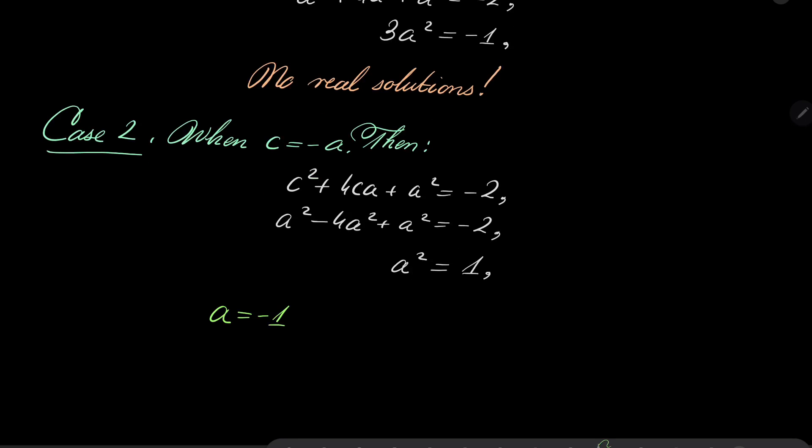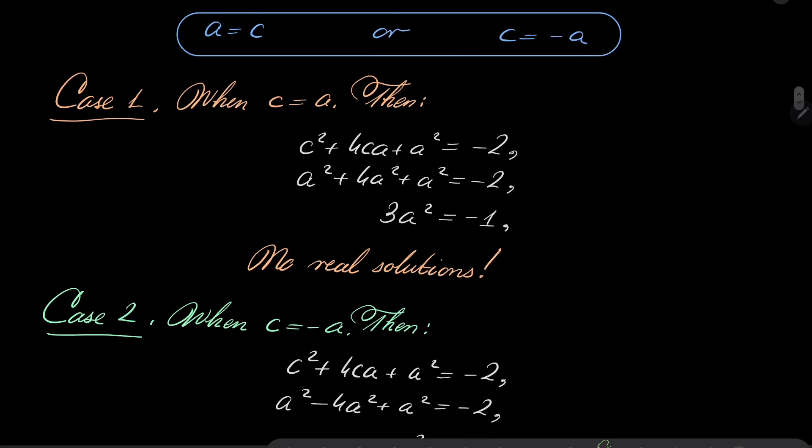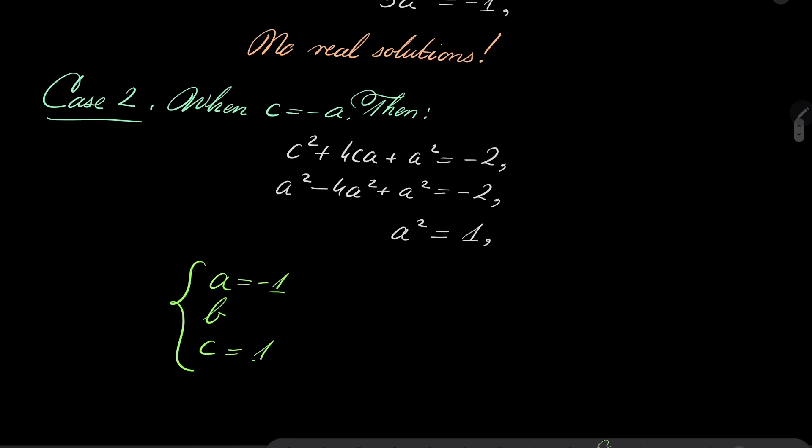So we have two possibilities. Either a = -1. What about b and c? Well, c is -a. So if a = -1, then c = 1. And what about b?